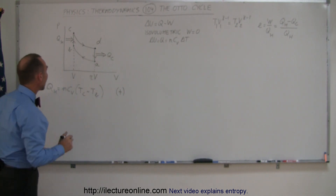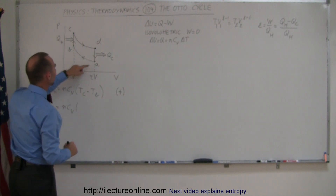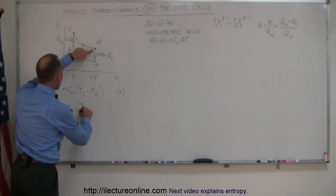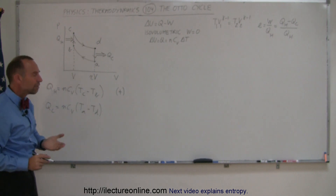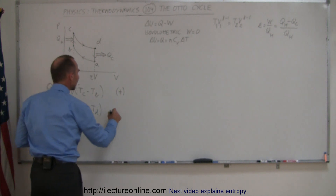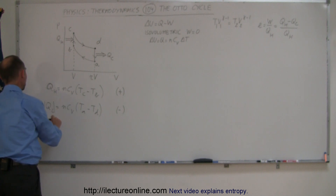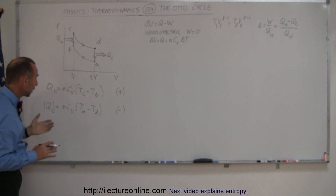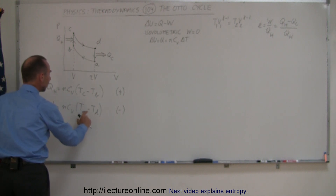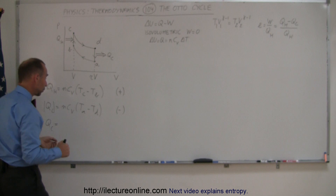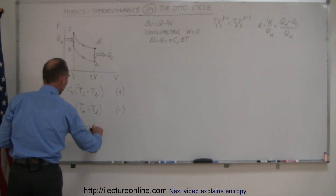Heat taken away from the gas, Q_cold, is equal to N C_V times the final temperature minus the initial temperature, so it would be T_A minus T_D. But since this is heat taken away from the gas, that must be a negative quantity. So the absolute value of Q_c equals this, and without the absolute value signs we write Q_c as N C_V times T_D minus T_A, which is now a positive quantity.